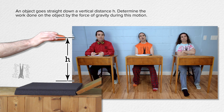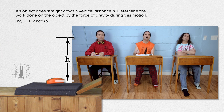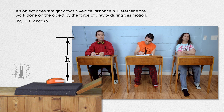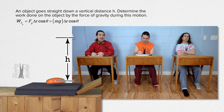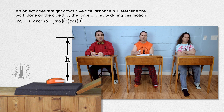Because the force of gravity is constant, the work done on the object by the force of gravity equals force of gravity times displacement times cosine theta. We use the magnitudes of both the force of gravity and displacement. Force of gravity equals mass times acceleration due to gravity. The magnitude of the displacement equals h. The force of gravity is down and the displacement is down, so the angle between those two directions is zero. So the work done on the object by the force of gravity equals mass times acceleration due to gravity times height h.